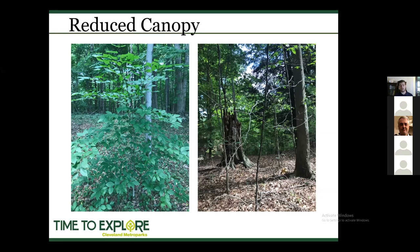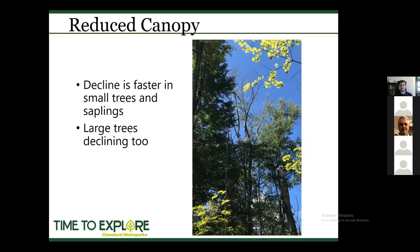A healthy beech stand has a full canopy on small saplings, but what we're seeing in Cleveland and the greater Cleveland area are dead saplings. It's pretty devastating to compare the healthy versus dead. Mortality happens faster in small trees and saplings, though large mature trees are also declining — some with only a handful of leaves visible only with binoculars. The decline happens in large trees, just typically at a slower rate.